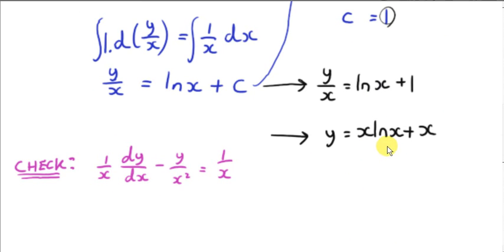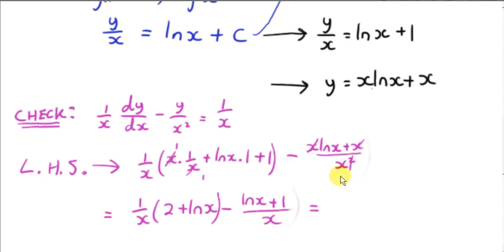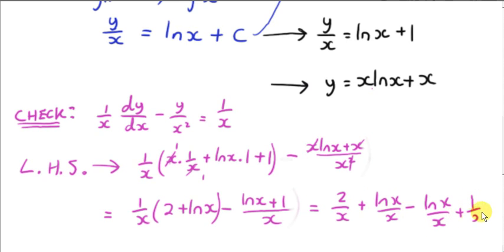As an aside, let's do a check of this solution. Here is the left-hand side of the differential equation after substituting in the solution — we have to find dy/dx. We have a product of functions: x times the derivative of ln(x), which is x·(1/x), plus ln(x) times the derivative of x, giving ln(x)·1. Then we differentiate x with respect to x to get plus 1. Plugging in for y, we can cancel an x above and below. This gives 2/x + ln(x)/x minus ln(x)/x minus 1/x — actually this should be minus 1/x. The ln(x) terms cancel, leaving 2/x minus 1/x = 1/x, which is indeed equal to the right-hand side.